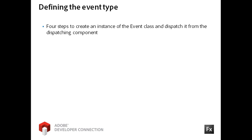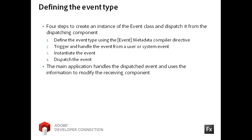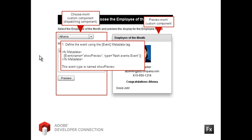There are four steps to create and dispatch a custom event. In your custom component, you will first define the name of the event type using the event metadata tag. The second step is to trigger and handle the user or system event. Next, you instantiate the event object and dispatch it to the parent component, which is often the main application. You handle this custom component event as you would any other Flex framework event. Remember that you have encountered event types before — for instance, the click event type for a button control and the change event for the drop-down list control. In this case, I am using the event compiler directive to create a custom event type named showPreview for the flash.events.Event class.